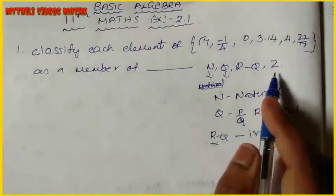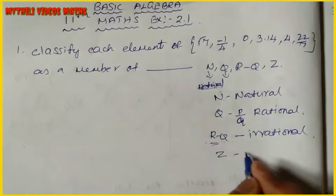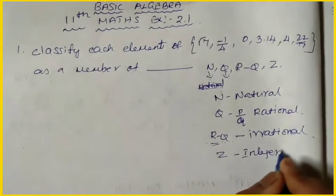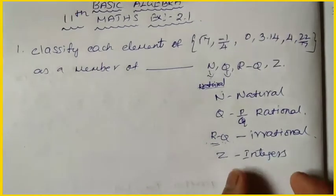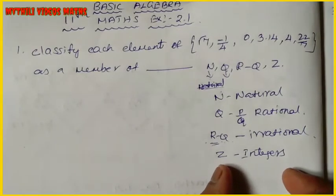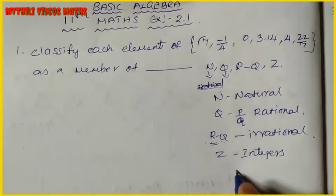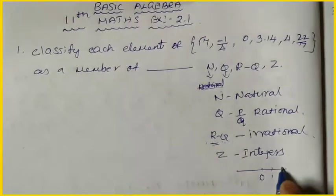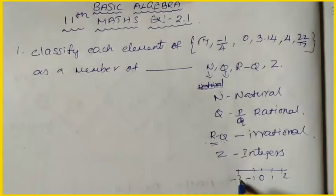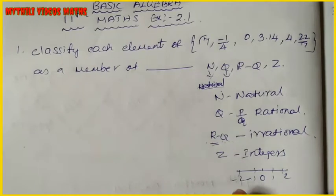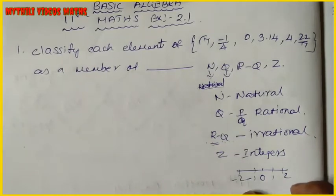Z is the integer. Integers include positive values, negative values, and 0. On the number line: 0, 1, 2, -1, -2. If you want to consider it as an integer, then you consider it as an integer.